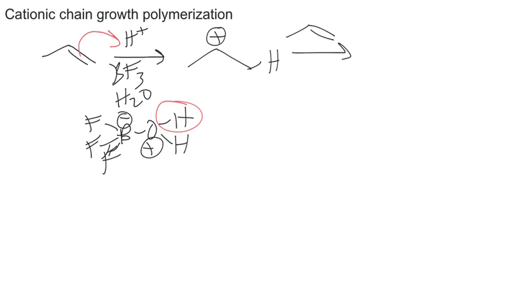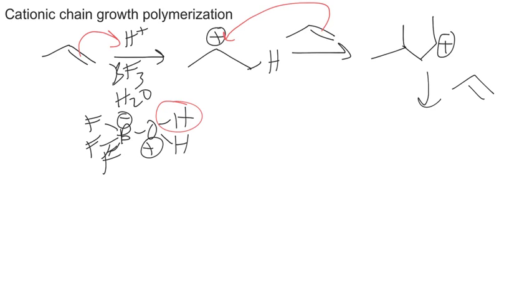Now this can actually react with itself. If we have another molecule of propene, this pair of electrons can come over and attack that positive charge to make the dimer, or the start of the polymer chain. This can continue — reacting with another propene, where this pair of electrons comes over and adds to keep extending the polypropylene chain.